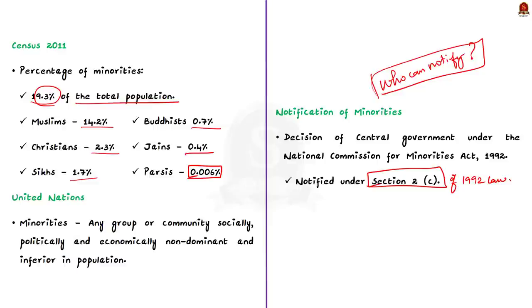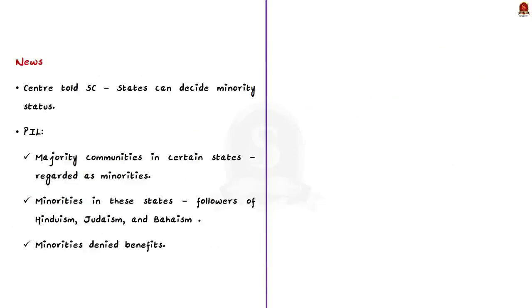Now, if there is a clear-cut law, then why there is a confusion? Earlier, the central government told the Supreme Court that the state governments could decide the minority status of the eligible communities within their territorial jurisdiction. And this came as a response to a public interest litigation, according to which majority communities in certain states are regarded as minorities. For example, as per the litigation, this is happening in Jammu and Kashmir, Nagaland, Arunachal Pradesh, Manipur, Mizoram, Lakshadweep, and Punjab.